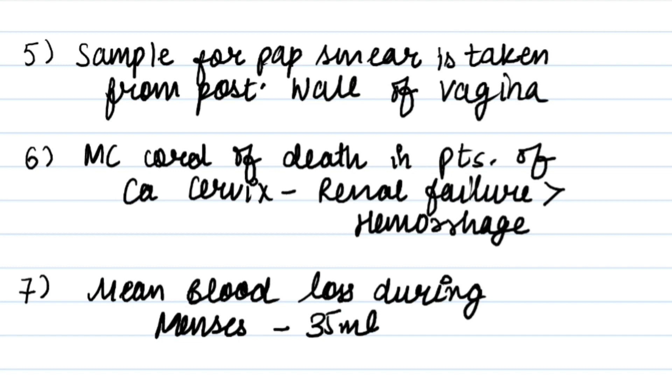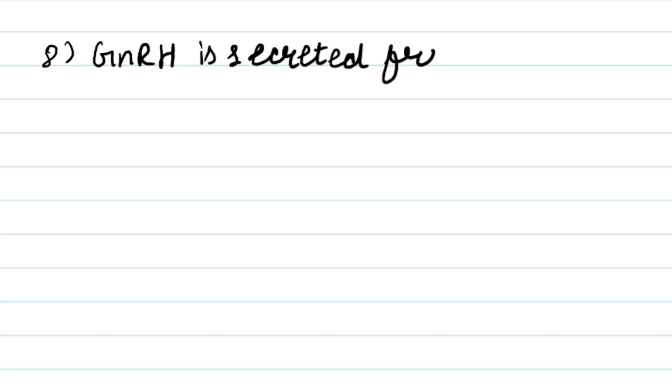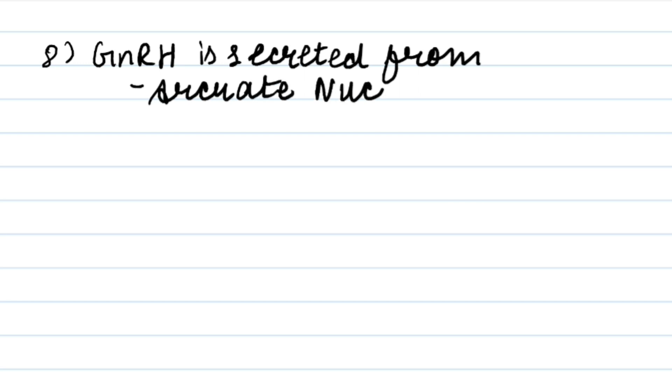The mean blood loss during menstruation is 35 millilitres. Next point: GnRH (gonadotropin-releasing hormone) is secreted from the arcuate nucleus of the hypothalamus.